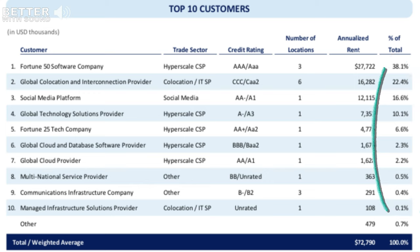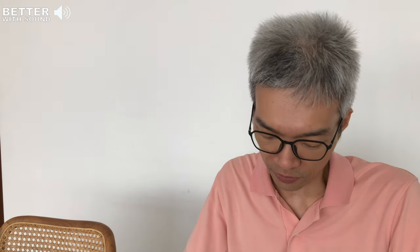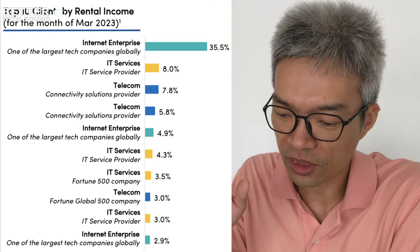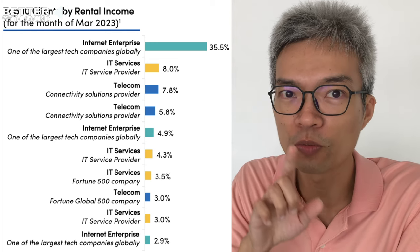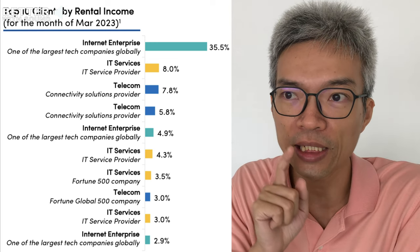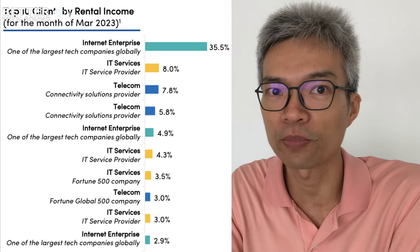Let's take a look at CapitaDC REIT. I did the sums and the top ten tenants contribute 78.7%. So is this a characteristic of data center REITs — despite having high gross profit margins?